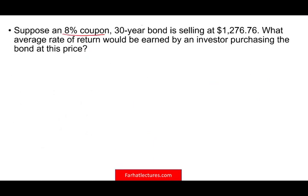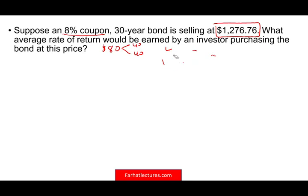Suppose an 8% coupon bond is selling right now for $1,276. What average rate of return would be earned by an investor purchasing this bond? You might say 8%, but your coupon rate is 8% — that's the coupon. What's going to happen is every six months your return, because you paid this much, is approximately $40 divided by $1,276 — that gives you the approximate return. Let's look at how you actually compute it.